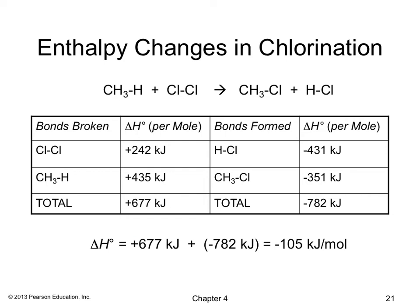To calculate enthalpy changes in chlorination, identify bonds broken (positive ΔH values from BDE tables) and bonds formed (negative ΔH values). Bonds broken: Cl–Cl (242 kJ/mol) and C–H (435 kJ/mol) sum to +677 kJ/mol. Bonds formed: HCl and CH3Cl give a total of −782 kJ/mol. The overall ΔH is +677 + (−782) = −105 kJ/mol, meaning the reaction is highly exothermic.